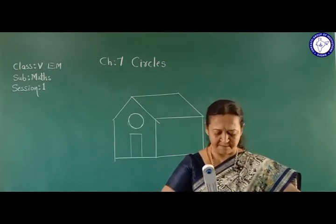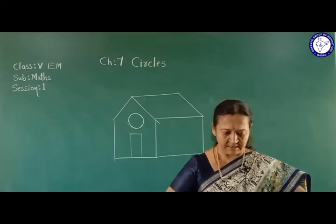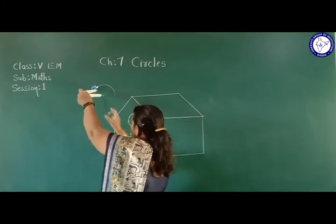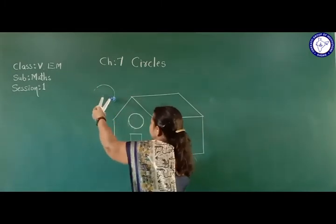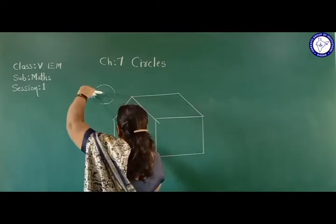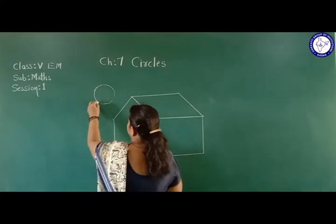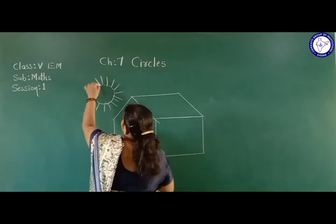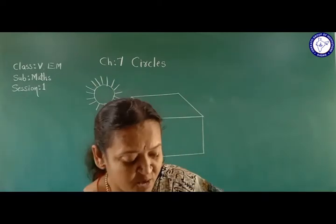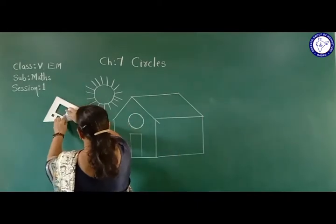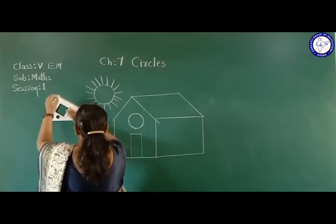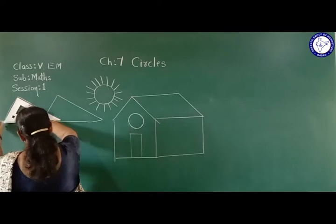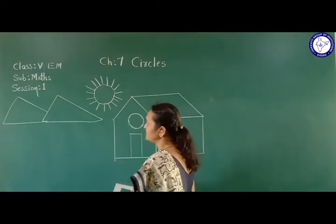With the help of this compass, we can construct a circle. Then with the compass again, we can construct a sun also. Here a sun is drawn - with the help of the compass you can construct a sun. We can also put lines with the hand or with the scale. Then some hills are given, so you can use set squares to draw the hills. Here we can draw the hills.